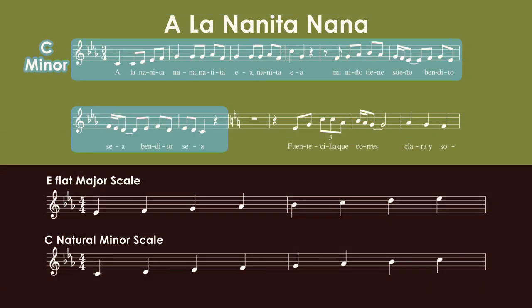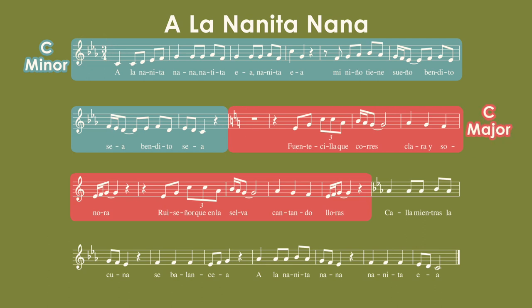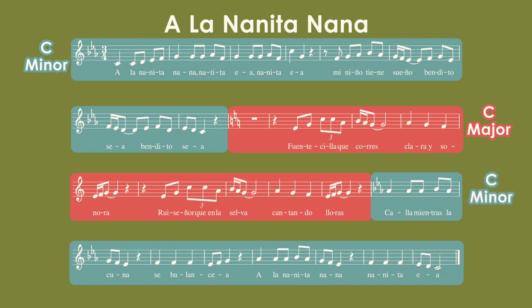Now that we know this first part is in C minor, what happens in the second part? We see that the key signature changes from three flats to no sharps or flats. We can also see that C natural and G natural are two of the more important notes in the melody, so we can safely say that this section is in C major. You can also hear this in the accompaniment part, which is playing a C major chord and a G major chord in this section, which very much implies C major as the key.